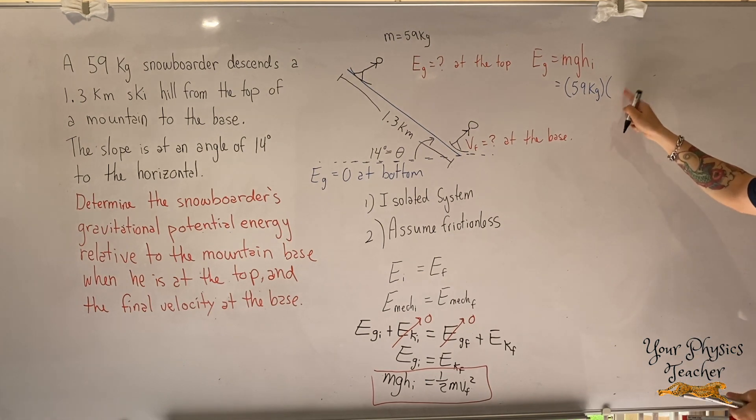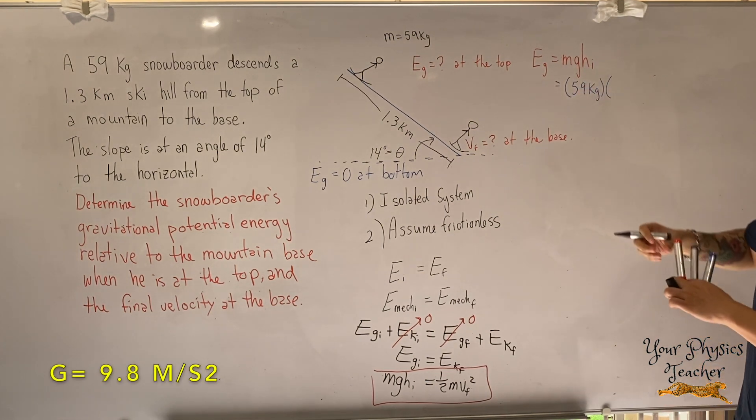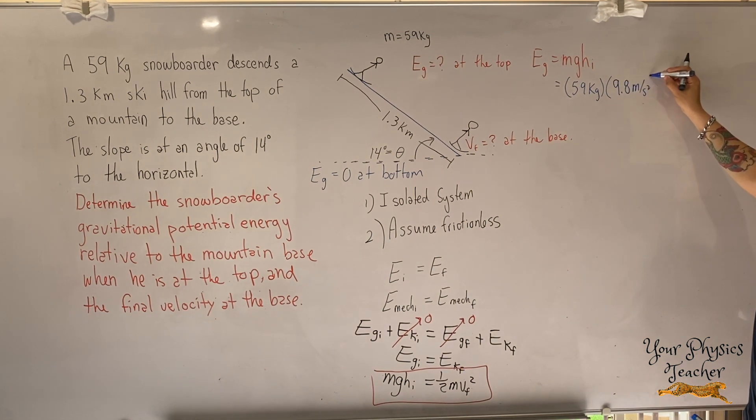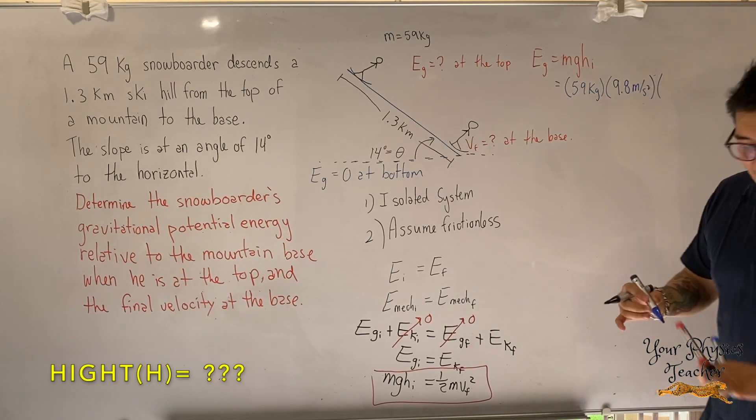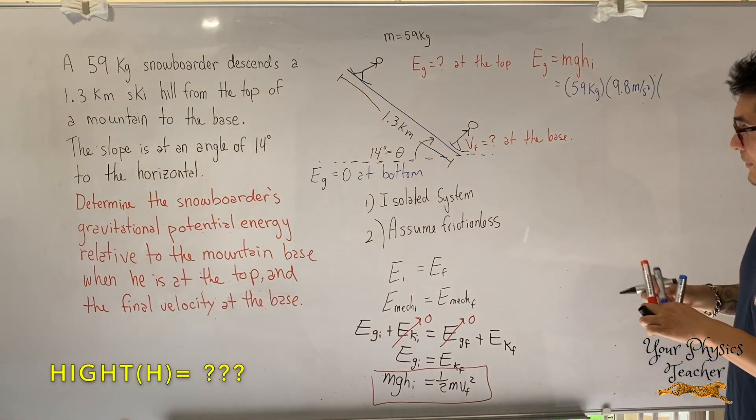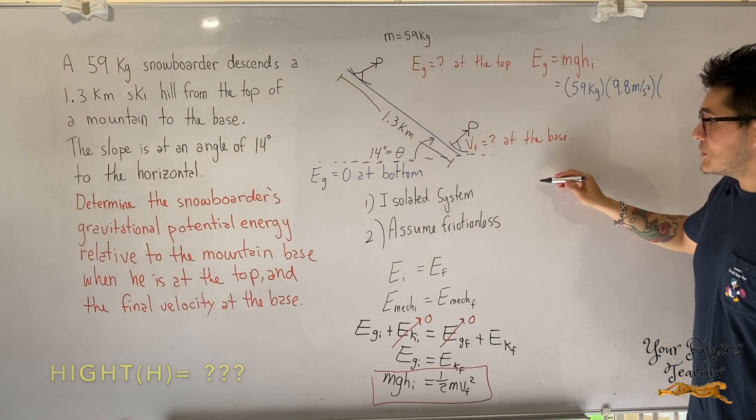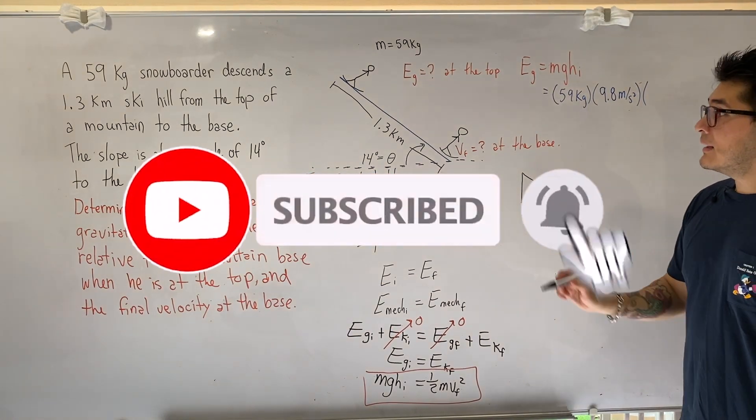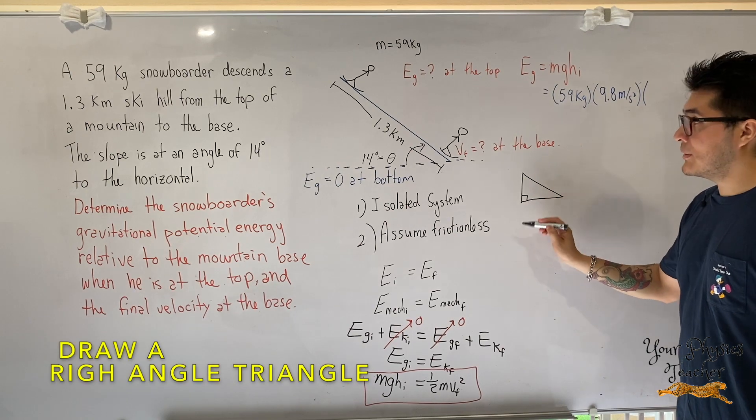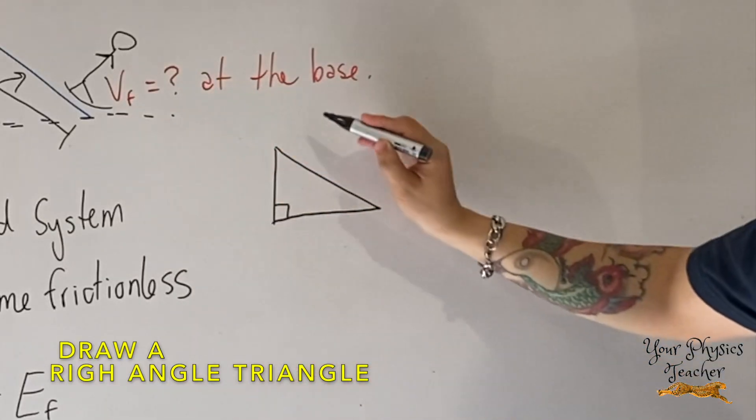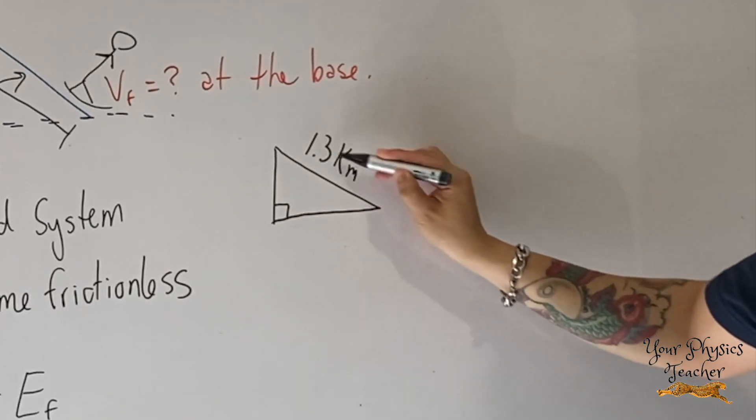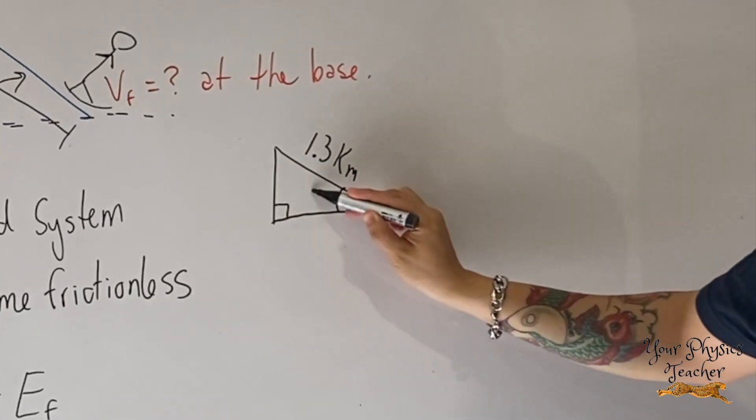Alright, height, I'm going to come back for you. But g, I know g. Let me fill it in. 9.8. Okay, height, I'm going to come back for you. But first, let's do some trigonometry. So I'm going to draw a simple right-angled triangle. Where this is going to be 1.3 kilometers, and the angle is 14 degrees.